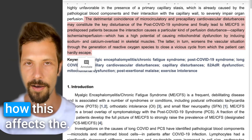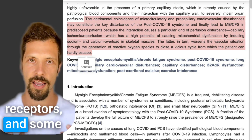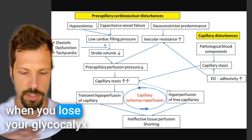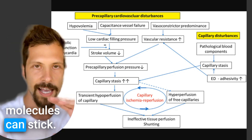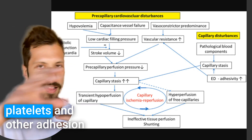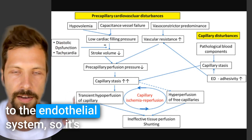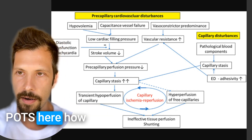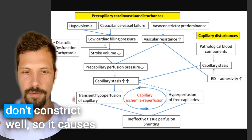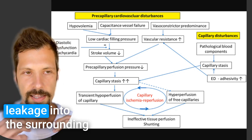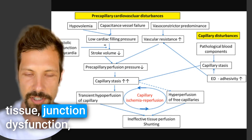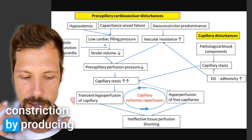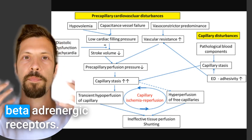I've also been talking about how this affects the beta-adrenergic receptors, and some people have what's called adrenergic POTS. When you lose your glycocalyx layer, adhesion molecules can stick. But with an intact glycocalyx, platelets and other adhesion molecules do not bind to the endothelial system, so it's important to have a healthy and rich glycocalyx. With POTS, the tone of the blood vessels doesn't constrict well, causing leakage into the surrounding tissue — junction dysfunction, essentially.